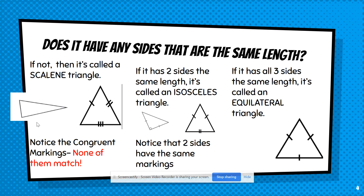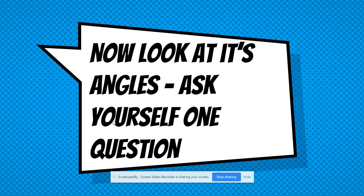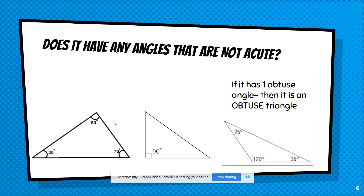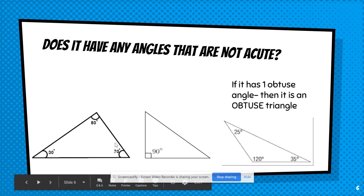After looking at the sides, look at the angles. Ask yourself another question: does it have any angles that are not acute? If all three angles are acute — all three less than 90 — then this is an acute triangle. It's an acute triangle because all three angles are less than 90.